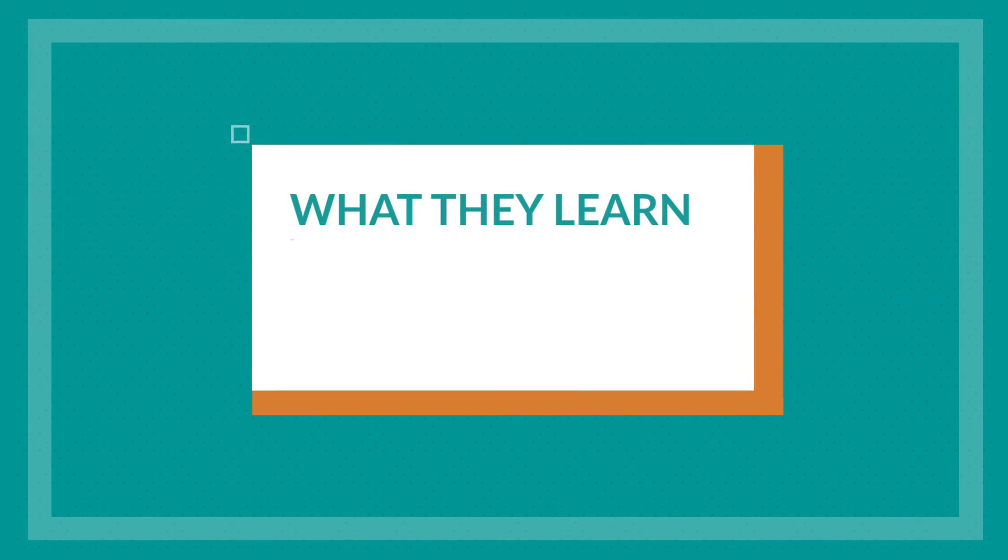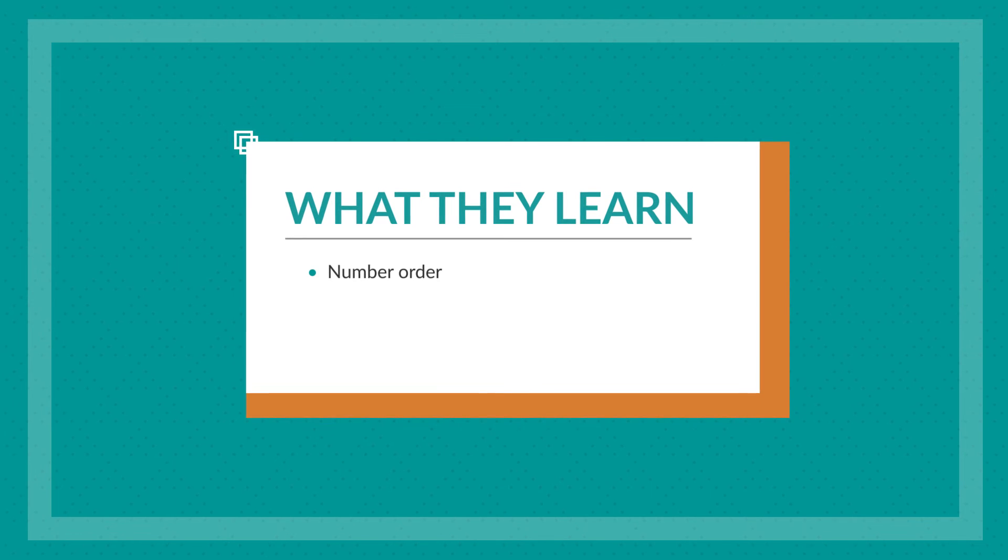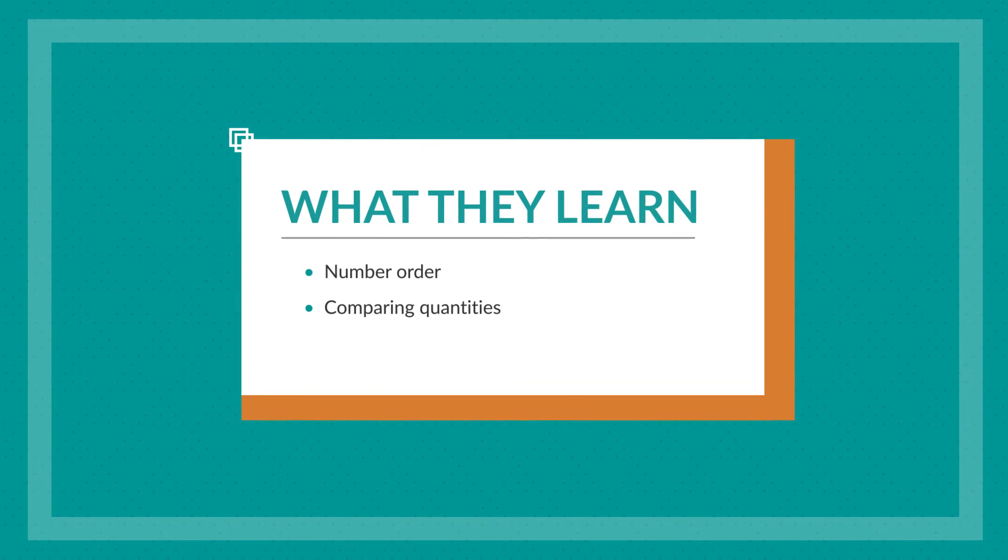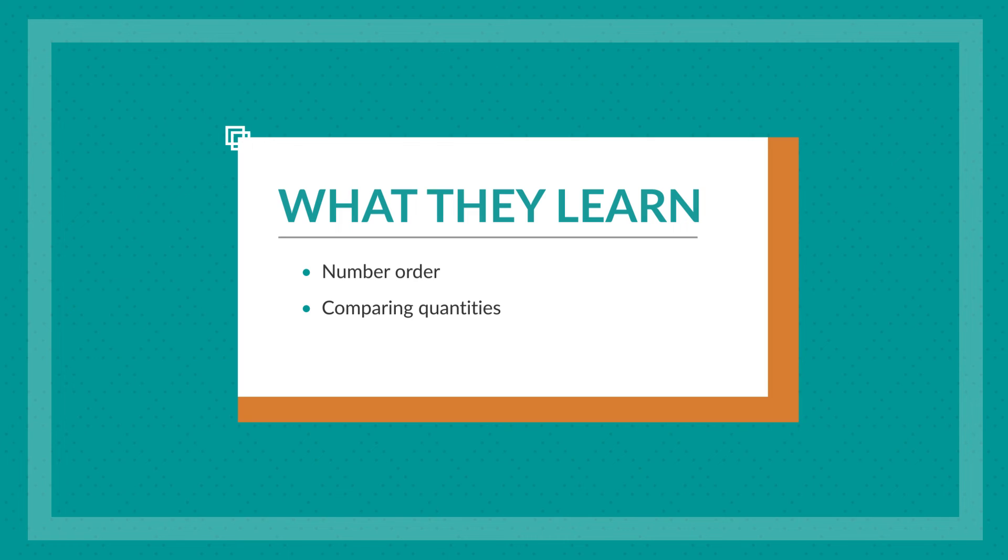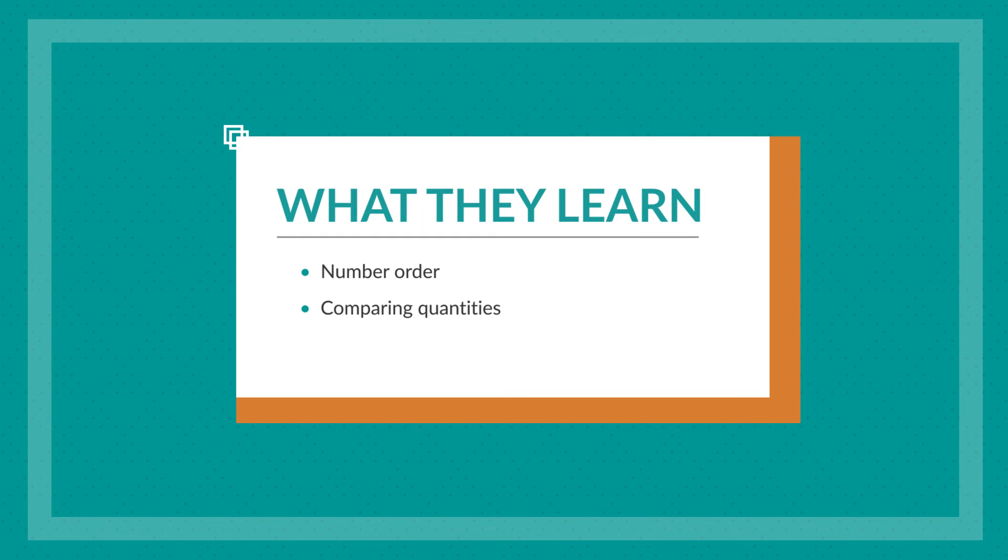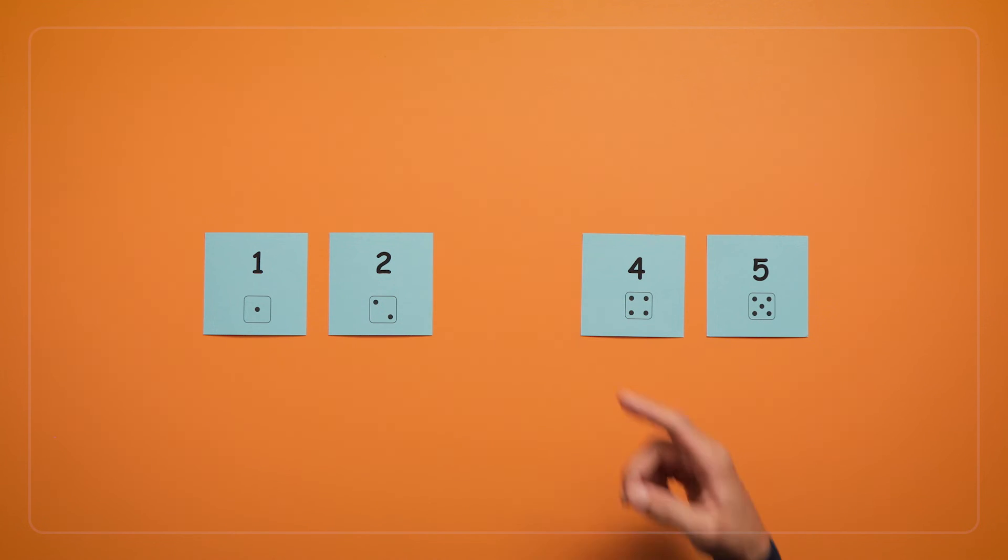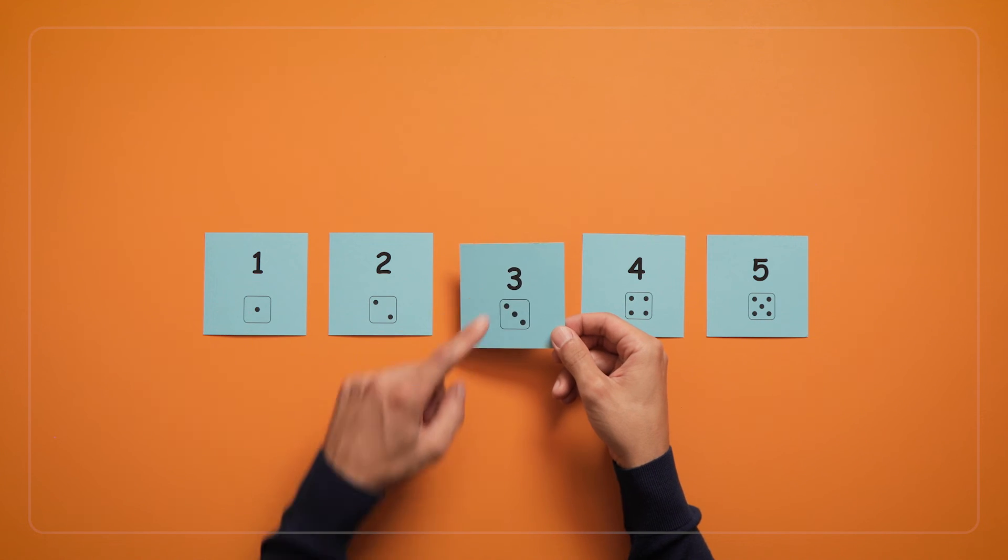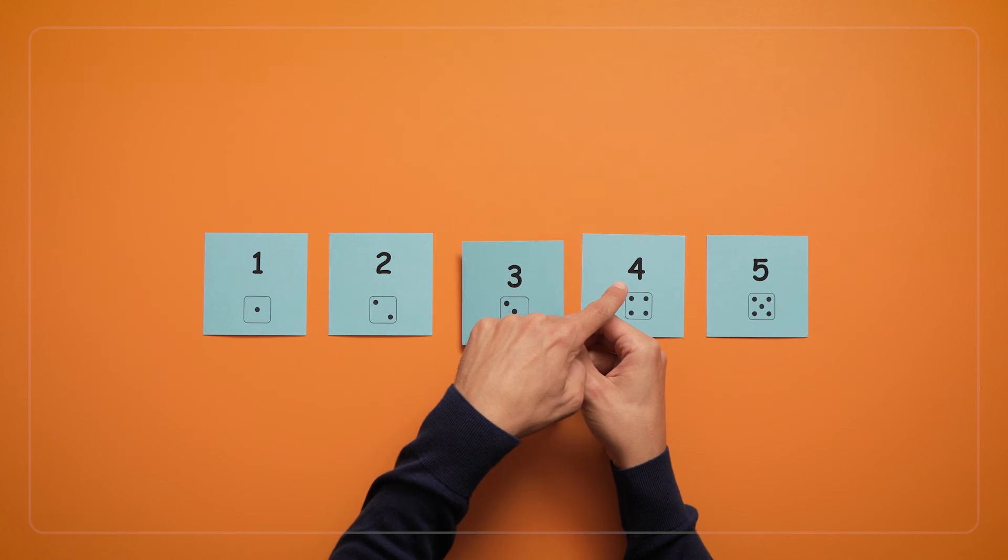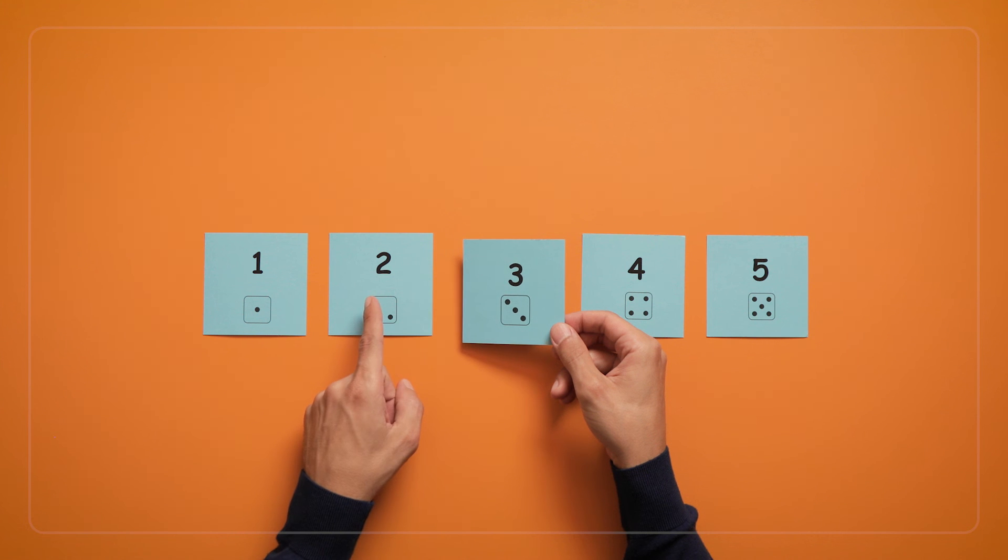In this game, children are getting a lot of practice with number order and comparing quantities, meaning that they're learning what numbers come before and after other numbers, as well as what numbers are more than and less than other numbers. This develops children's number sense, which makes it easier for them to think and talk about numbers and to build their understanding of more complex math ideas like addition and subtraction later on.